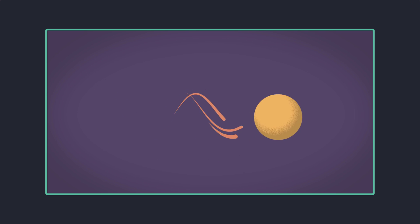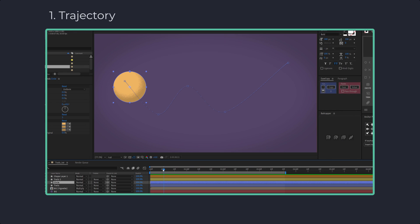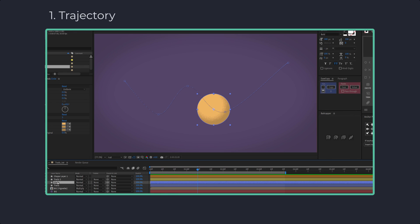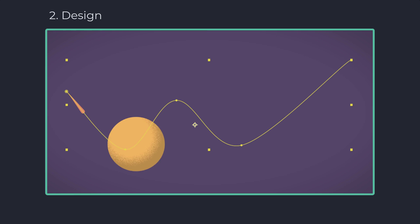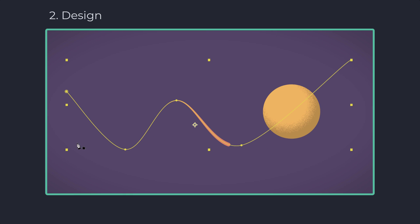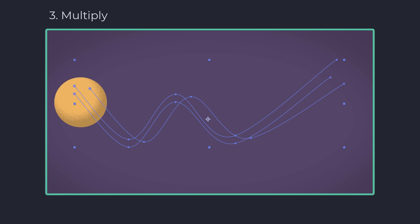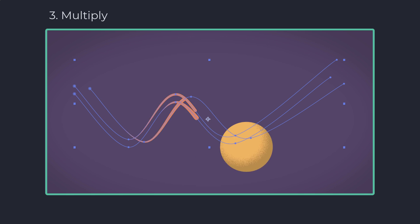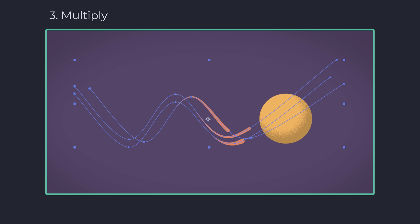Within this tutorial, I want to teach you how to create trails behind a moving object. I will showcase how to give the trails the same trajectory, then we design and animate those taper strokes with trim paths, and we will multiply and customize their movement.